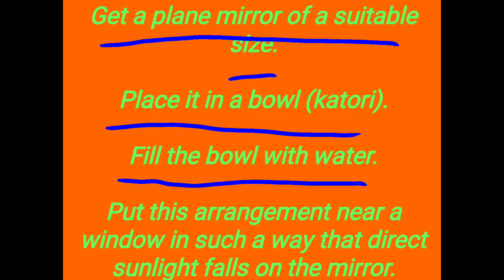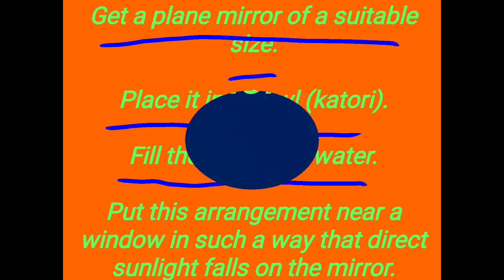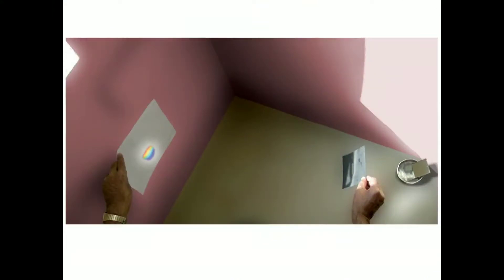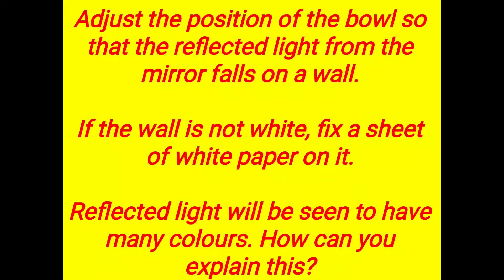Put this arrangement near the window in such a way that direct sunlight falls on the mirror. Adjust the position of the bowl so that the reflected rays from the mirror fall on the wall.